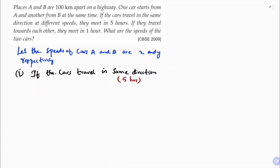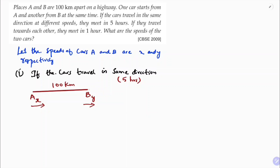Imagine these two cars A and B — they are 100 km apart. This is A and B. Speed of car A is x, and speed of car B is y. If they travel in the same direction, they will meet at a point. Just imagine they will meet at point C.